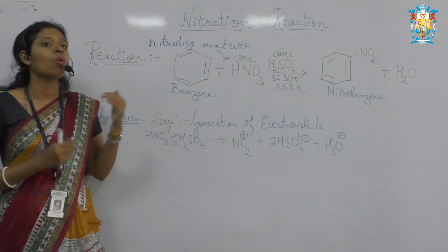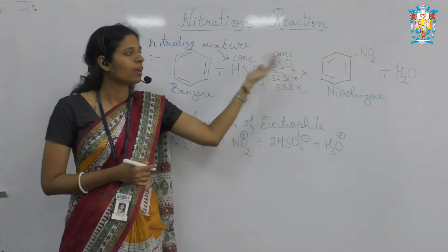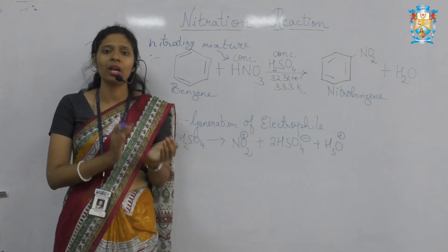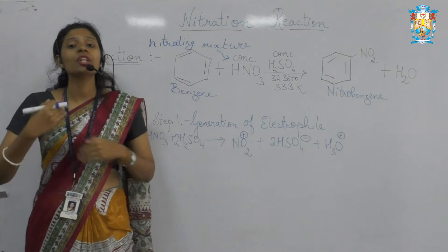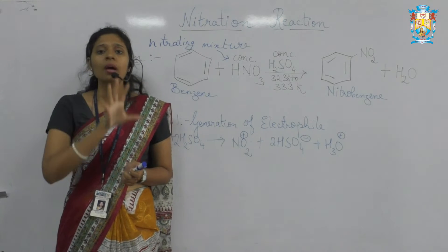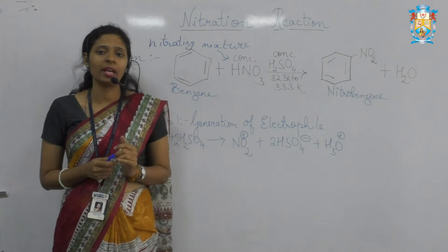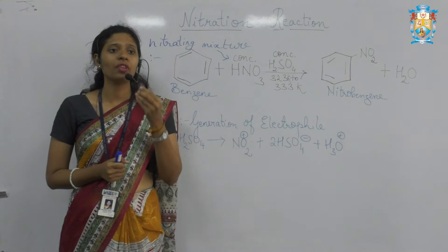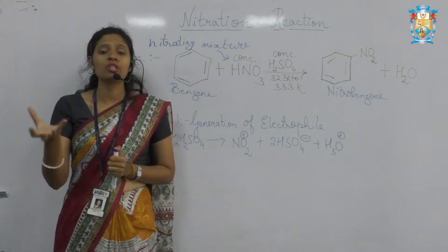If you look at benzene as the reactant and nitrobenzene as the product, the change observed is the attachment of a nitro group on the benzene ring. Benzene, if you observe carefully, is a nucleophile, while the nitro group is an electrophile. So first of all, we have to generate this electrophile — benzene is already available, and the nitro group has to be generated.